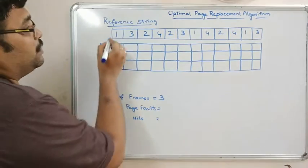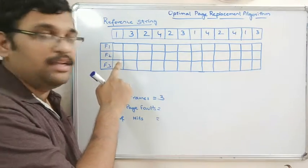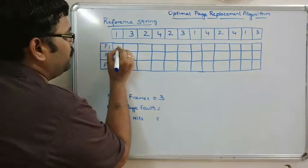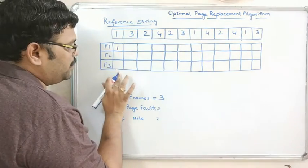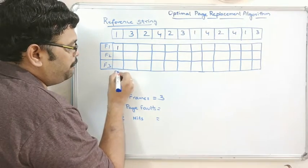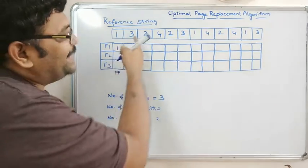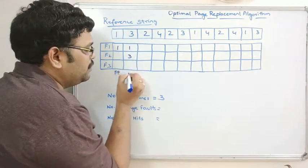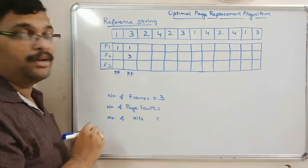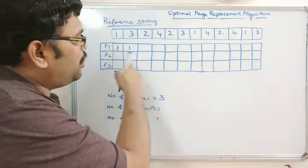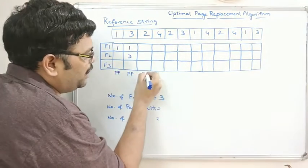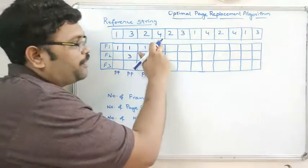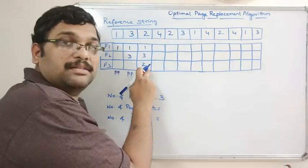Starting with the first reference: all three frames are empty, so we load page 1 — that's a page fault. Next is page 3; two frames are still free, so we load it — again a page fault since 3 is not in main memory. Next is page 2; it's also not in main memory, so again a page fault, and we load page 2 into frame three.